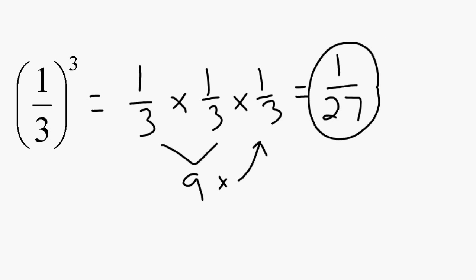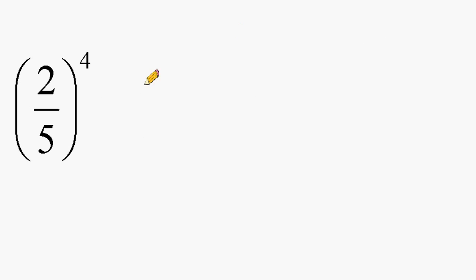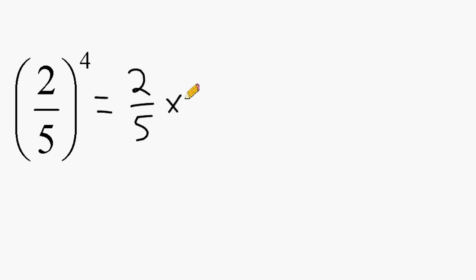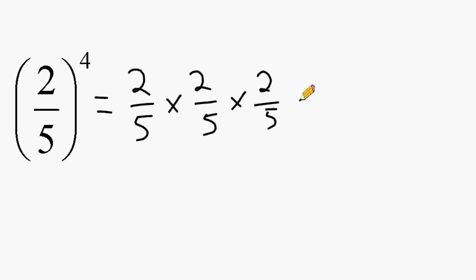Let's try one more example. We have 2 fifths to the fourth power. So we are going to start by writing this in expanded form, and then multiply our numerators together.